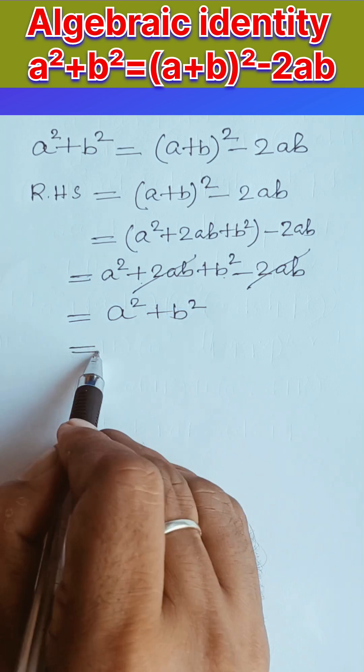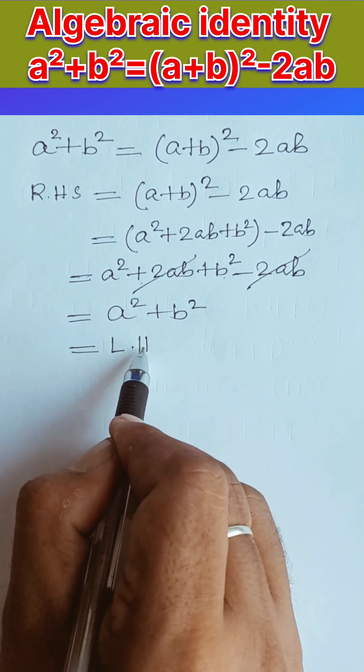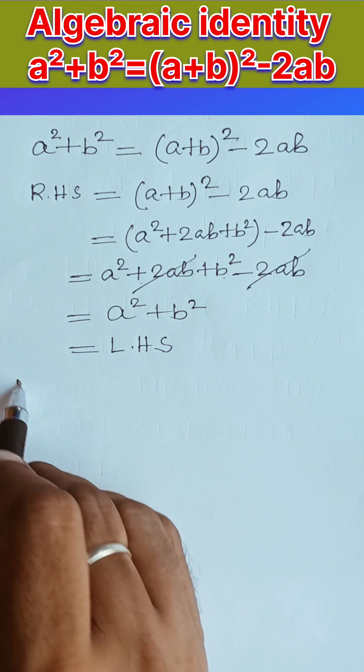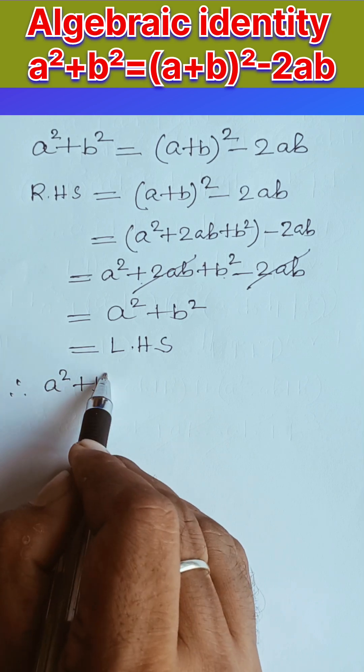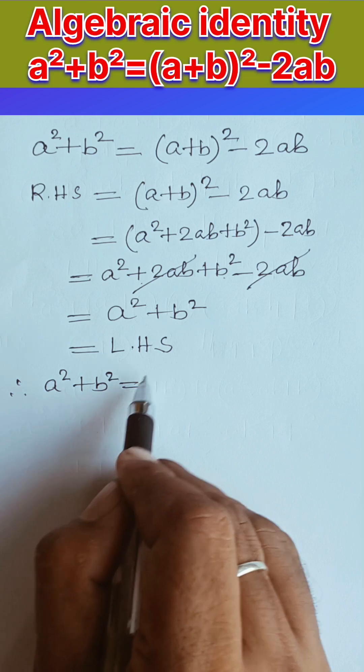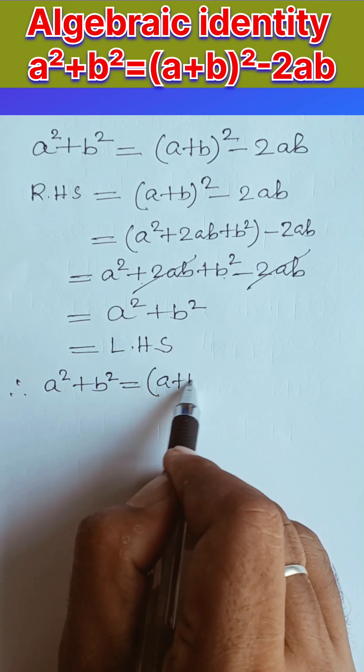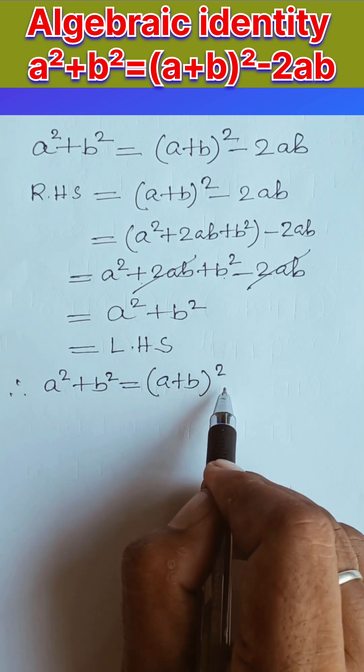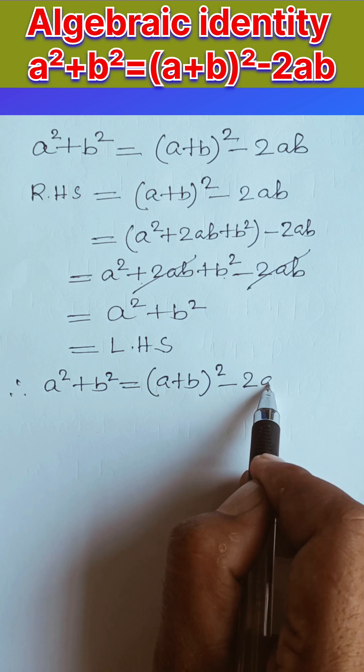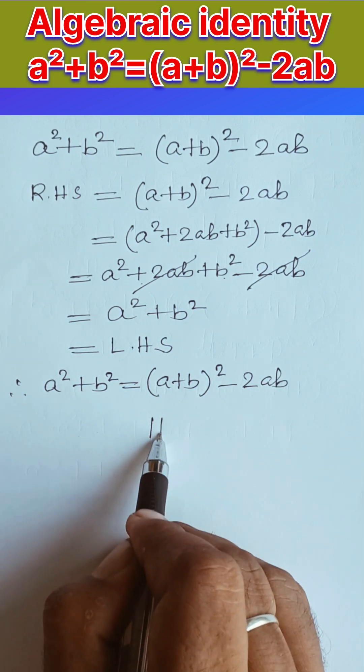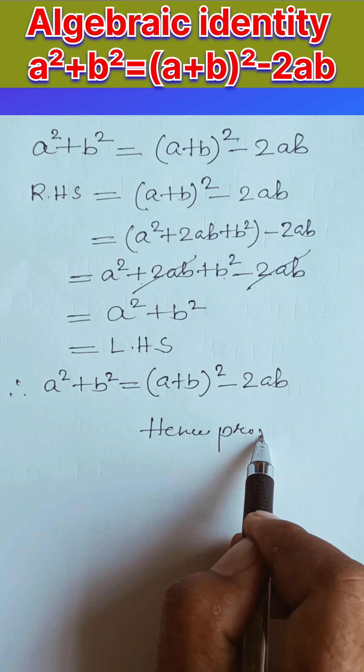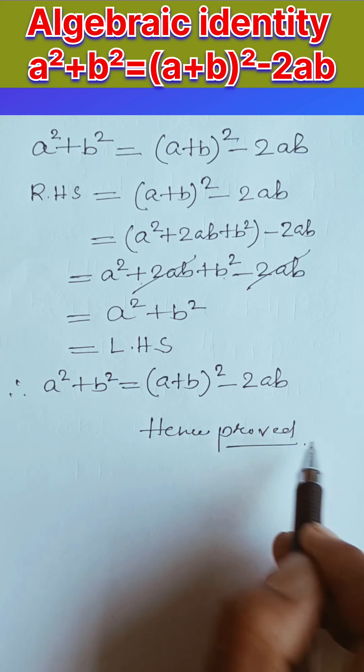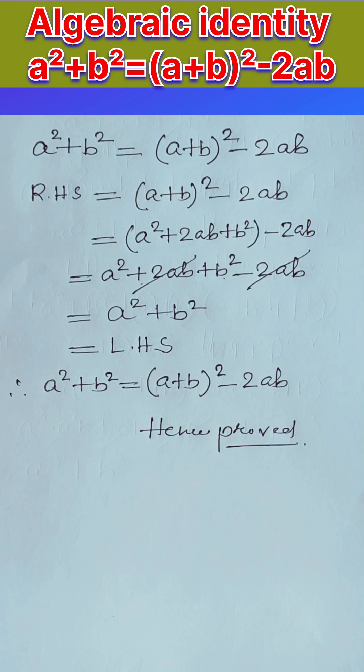Left hand side. Therefore we can write a² + b² is equal to (a+b)² - 2ab, hence proved. I hope it's clear to everyone.